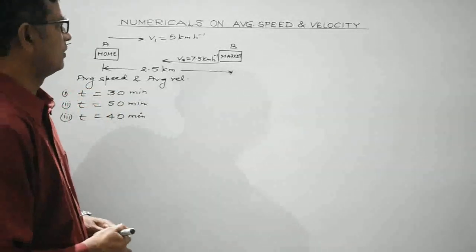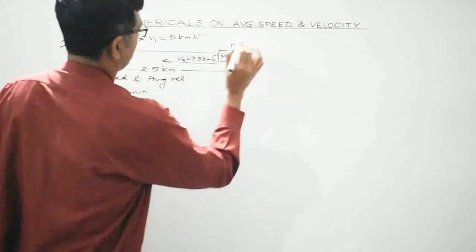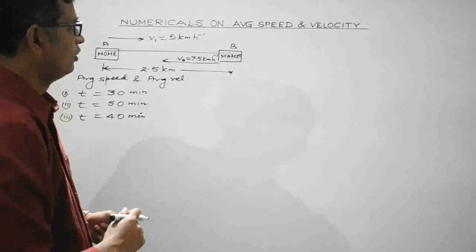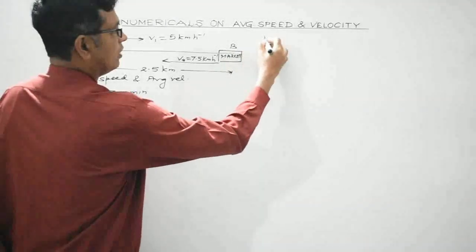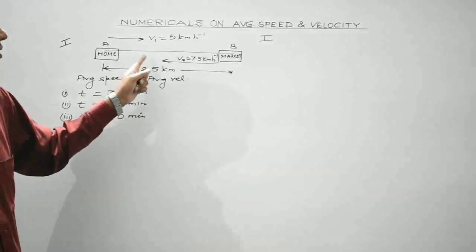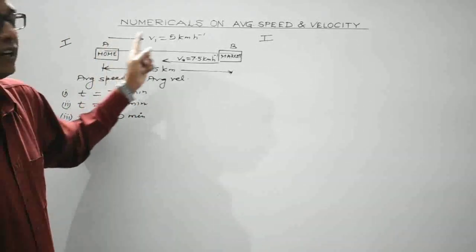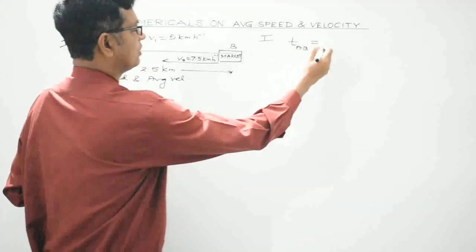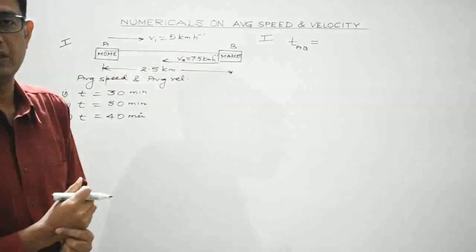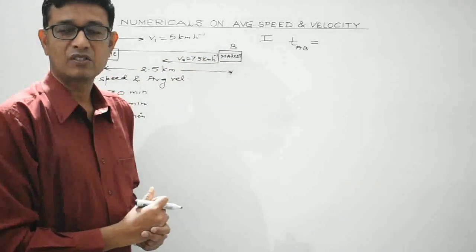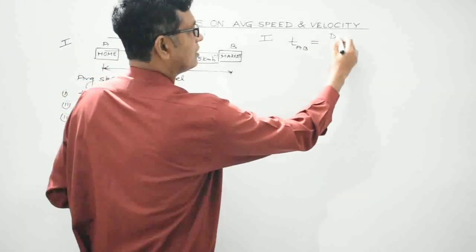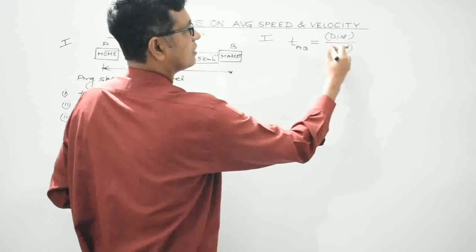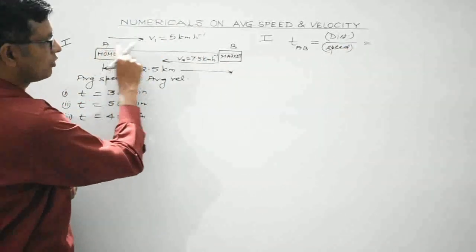These are two points A and B. The distance between A and B is 2.5 km. First, we will find the time taken by the person to reach from point A to point B. In uniform motion when speed is constant, time is given by distance over speed.